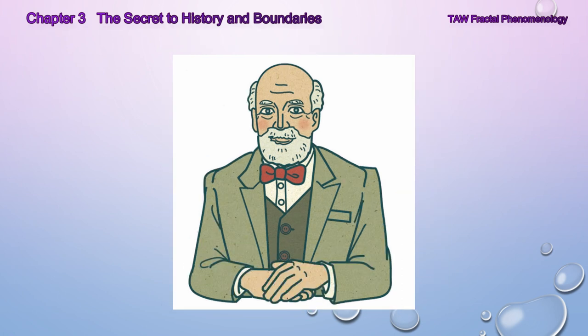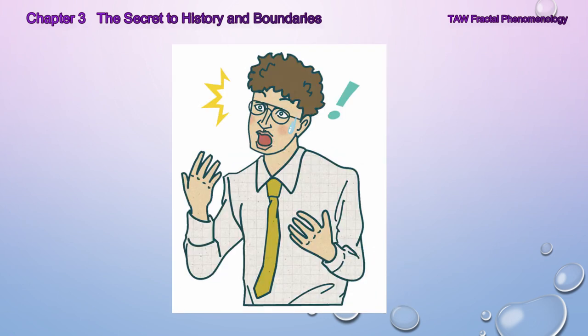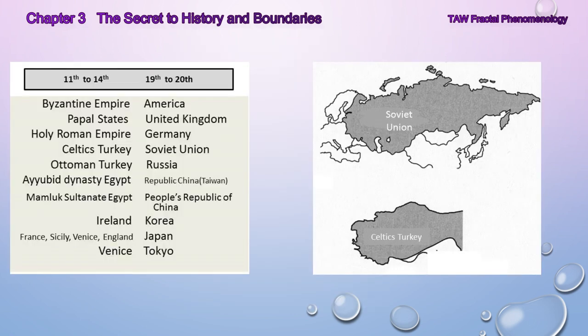Upon returning home that day, MJ turned over cardboard boxes and bookshelves to dig through all references and find maps of Europe in the Middle Ages to verify his discovery. He was amazed at his finding. What MJ had discovered was that the countries that had similar history patterns all had matching shapes as well. What exactly does this mean?